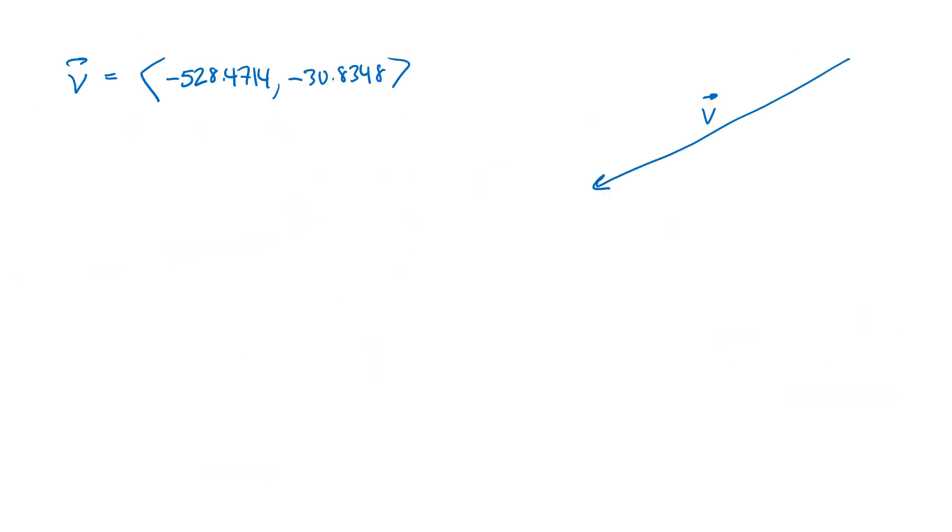This velocity vector, there's two things that we need to know about it. We want to know the speed of the plane, which is going to be the magnitude of this vector. So the magnitude of V is going to be the square root of the squares of its components. So that's going to be negative 528.4714 squared, plus negative 30.8348 squared. And when we work that out, we get approximately 529.37 miles per hour. So that's the ground speed of the plane.